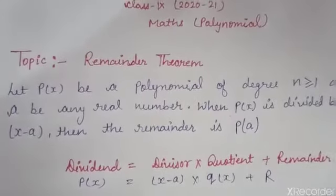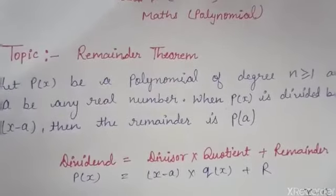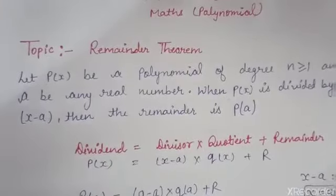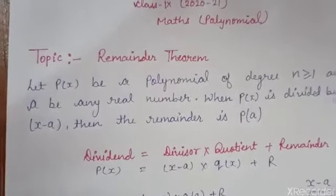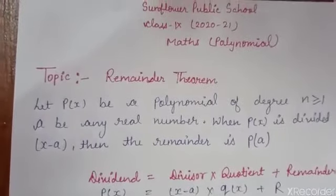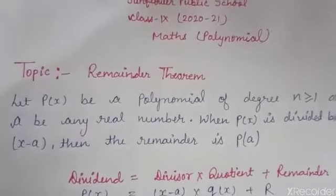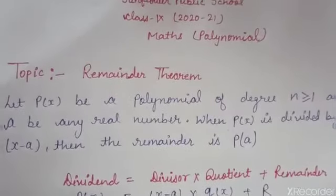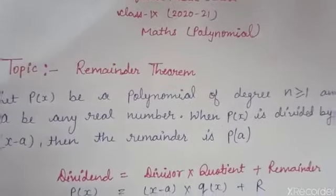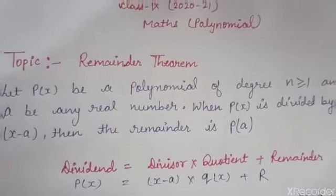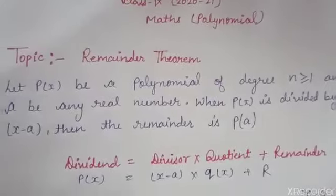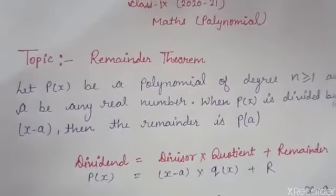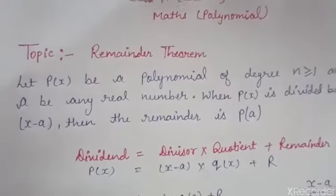But how can you find it? And what is the statement of the theorem? Firstly, we check the statement. The statement is that if P of X is a polynomial of degree greater than or equal to 1 — that means you have polynomials in which the highest degree of the variable is 1 or more than 1 — and A is any real number, then when you divide the given polynomial by a linear polynomial X minus A, the remainder is P of A.